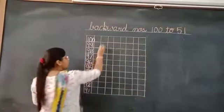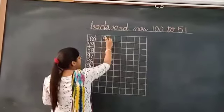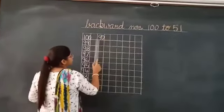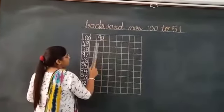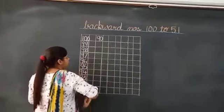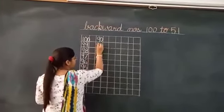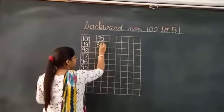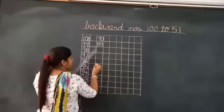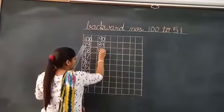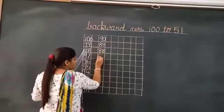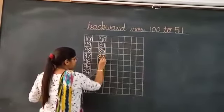That is 90. Then which number will come before 90? Answer is 89, 88.